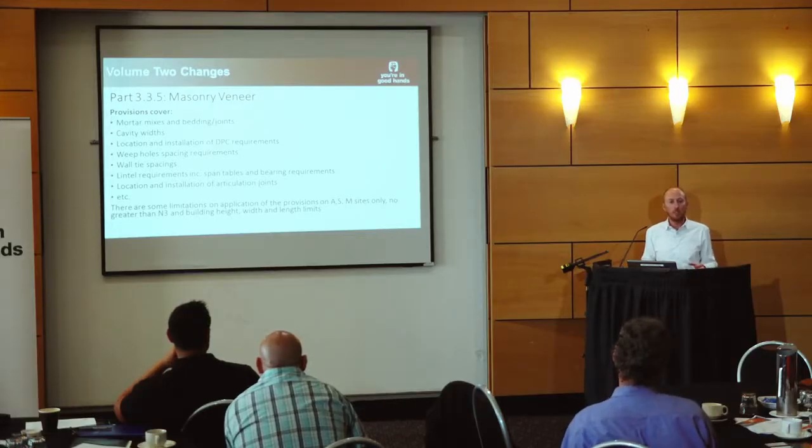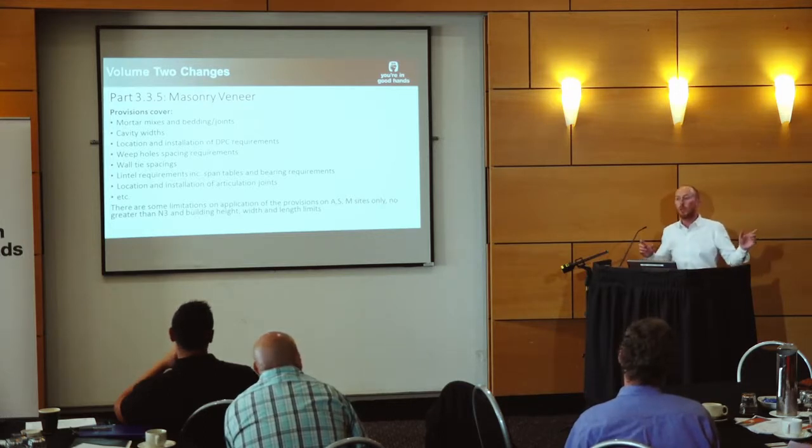It isn't a complete reincorporation of the old ACP for masonry construction — it's been updated based on changes in technology and informed by AS 4773. But it captures all your current expectations: mortar mixes, bedding joints, cavity widths, location and installation of damp proof courses, weep hole spacings, wall tie spacings, lintel requirements, and articulation joints. Really useful stuff for when you're on site and need to quickly look up a damp proof course height or bearing requirements for a lintel.